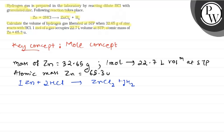Therefore, we can say that 65.3 gram zinc produces 22.7 liters of hydrogen at STP.